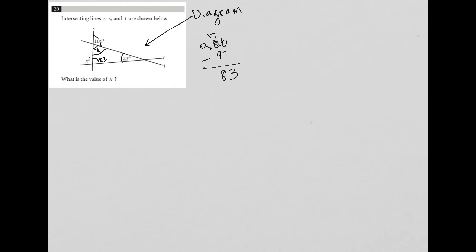And then the X right next to it would be the supplement to that, which means that it would be 97. 83 plus 97 is 180. So then X must be 97.